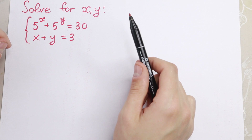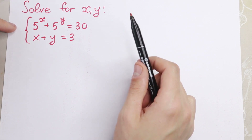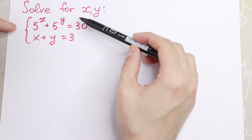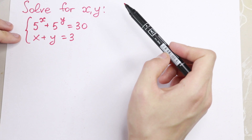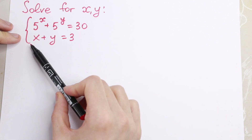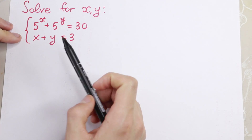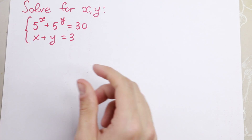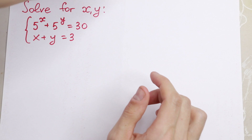This is a little bit complicated system of equations, because we have x and y in our powers, in our exponents. And right here we have just x plus y equal to 3.